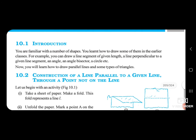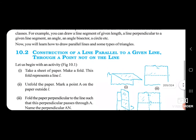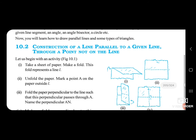Construction of a line parallel to a given line through a point not on the line. Let us begin with an activity. Take a sheet of paper and make a fold. This fold represents a line L.